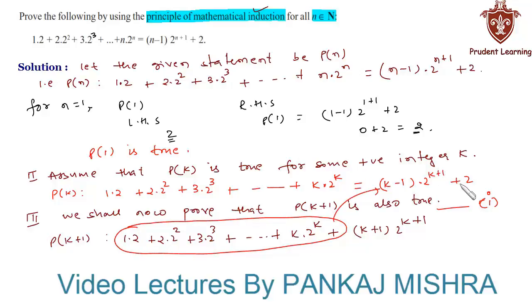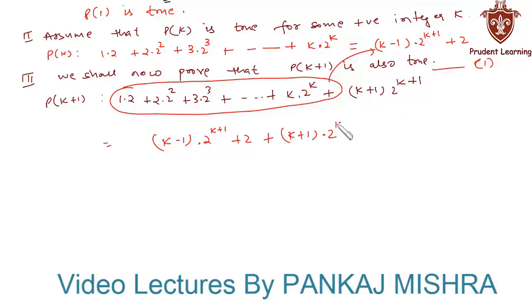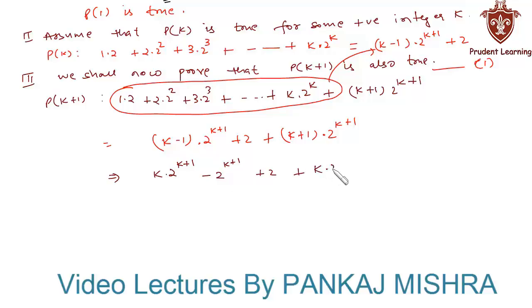Substituting gives us (k−1)·2^(k+1) + 2 + (k+1)·2^(k+1), keeping the remaining terms. Expanding, we get k·2^(k+1) − 2^(k+1) + k·2^(k+1) + 2^(k+1) + 2.